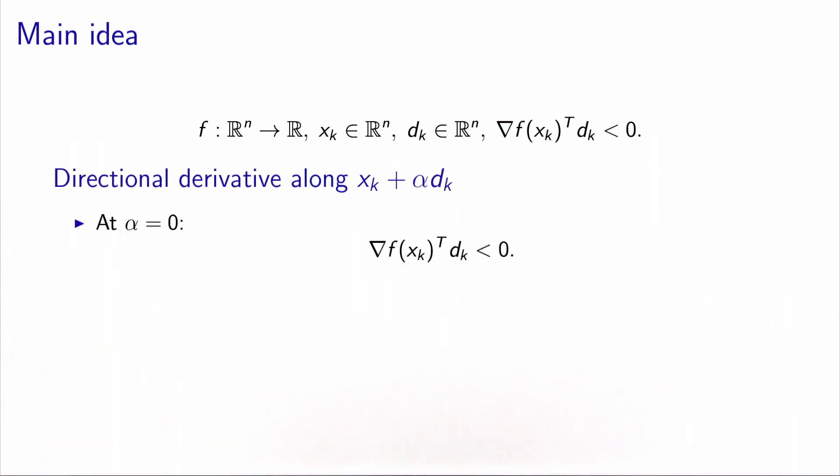And now, let's look at this directional derivative along the direction dk. What we know is that at alpha equals zero, the value of the directional derivative is negative, right? Because we have a descent direction.